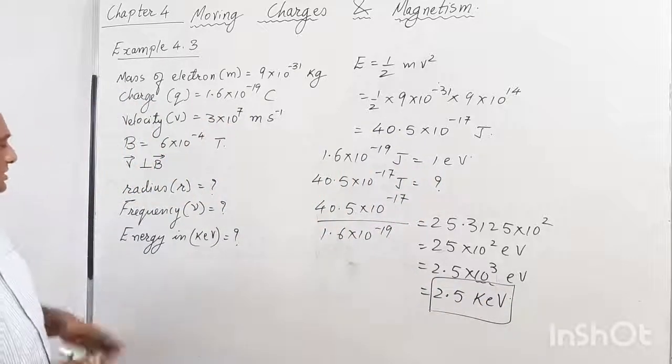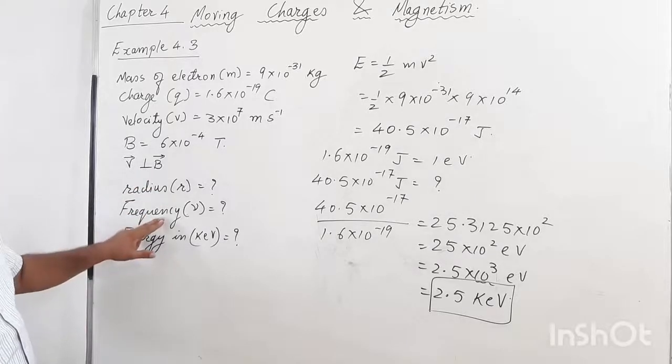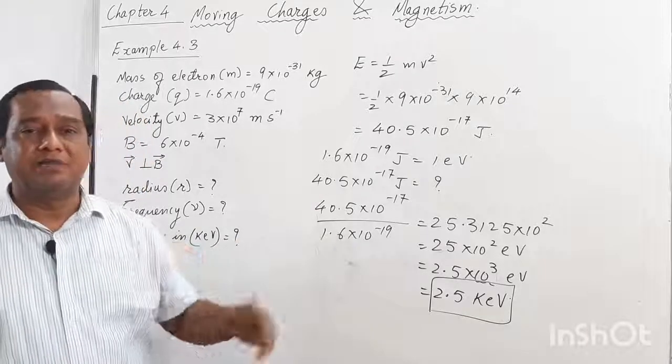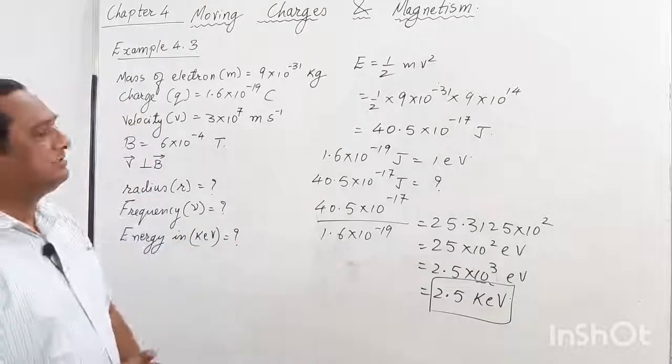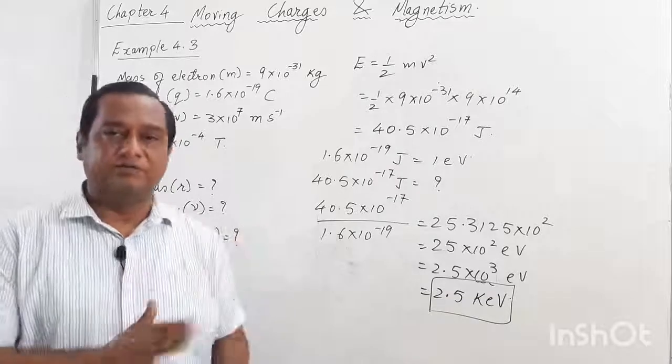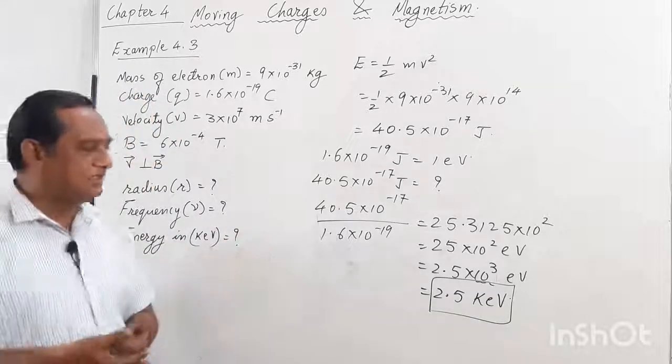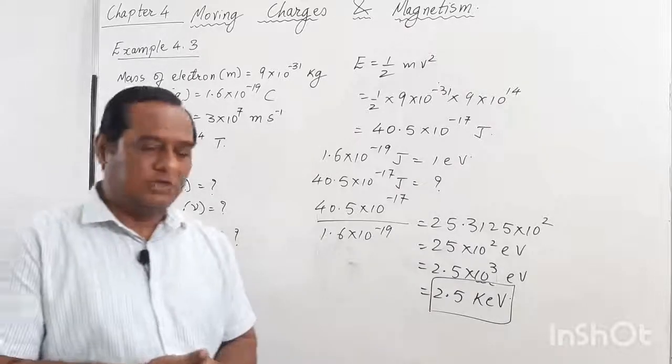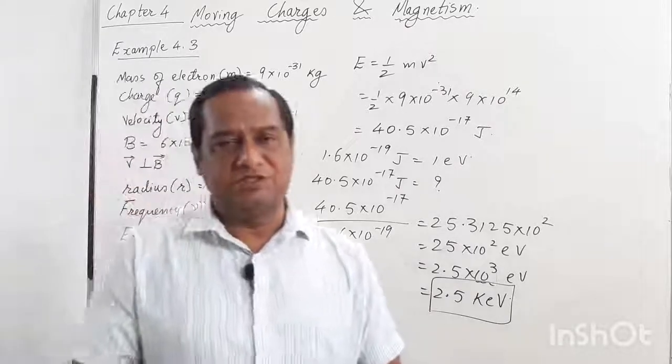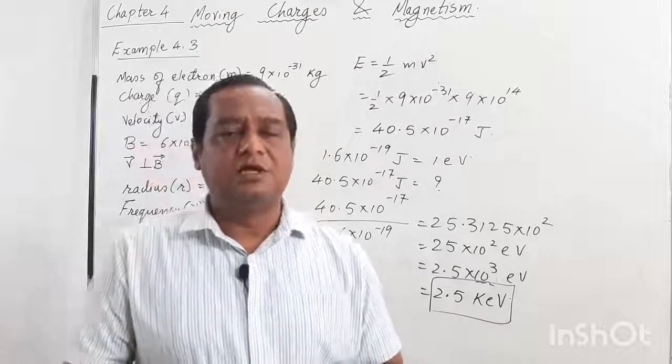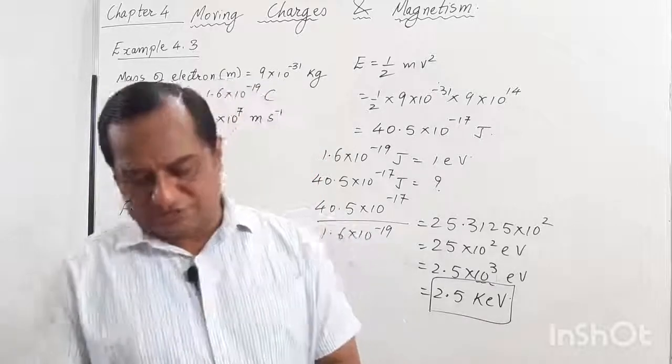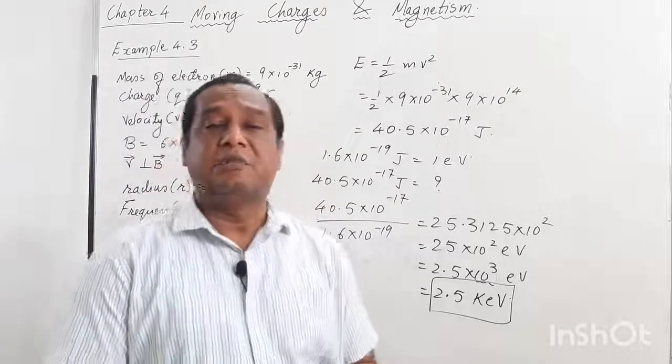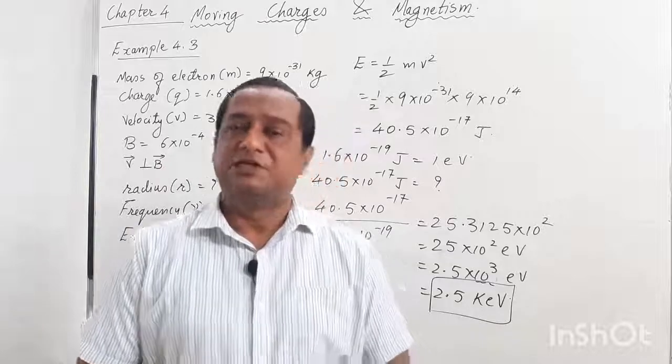So students, we finished the three questions. We found the radius, the frequency, and the energy in kilo electron volts. You can copy this portion of the video or see the solution in your textbook. I find some error in the textbook solution. Anyways, we finish that topic. In the next video, we will proceed with the next topic: motion in a combined electric and magnetic field. See you in the next video.